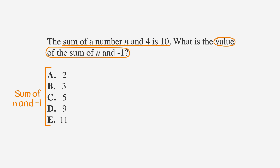So 'the sum of a number n and 4' just means n plus 4. 'Is' becomes equals, and we keep the 10. So the first expression is n plus 4 equals 10. If we subtract 4 from both sides, we find that n equals 6.